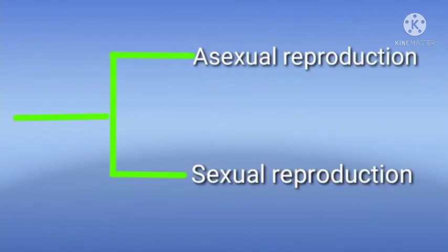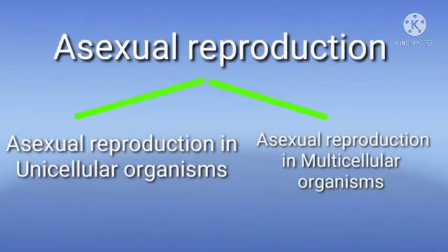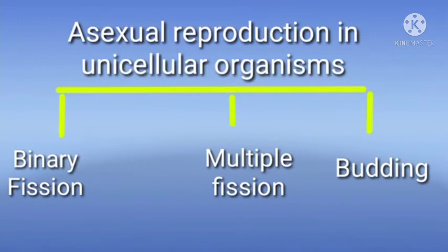This reproduction is further subdivided into asexual reproduction and sexual reproduction. Let us study asexual reproduction. Asexual reproduction is further subdivided into two parts: unicellular organism and asexual reproduction in multicellular organism. Asexual reproduction in unicellular organisms is further subdivided into binary fission, multiple fission, and budding. In binary fission, a complete body is divided into two parts. Let us see how it exactly works.